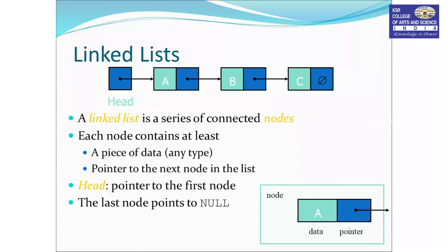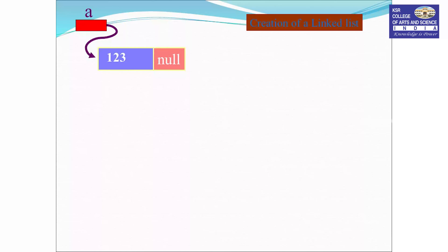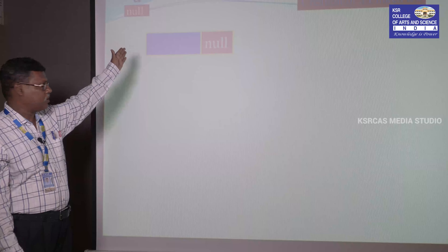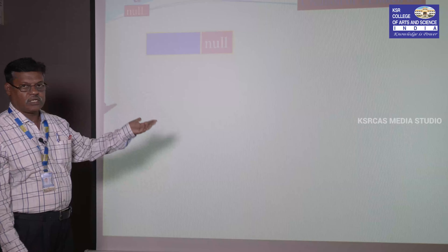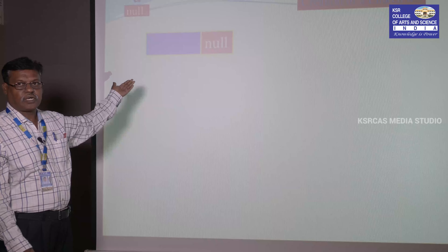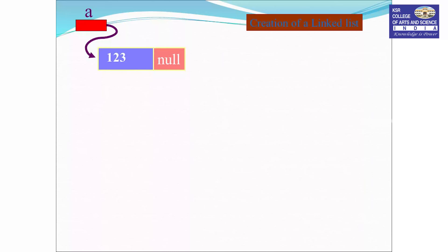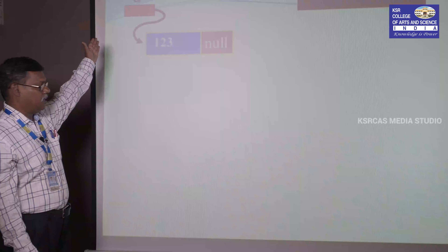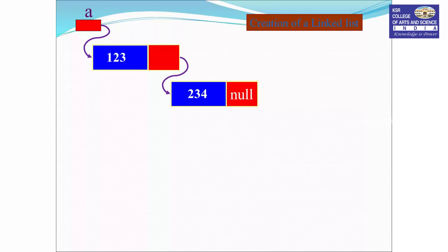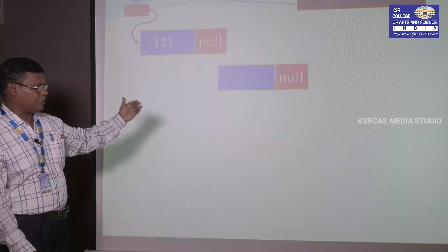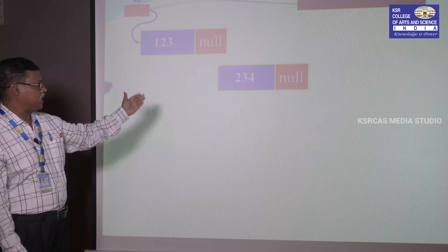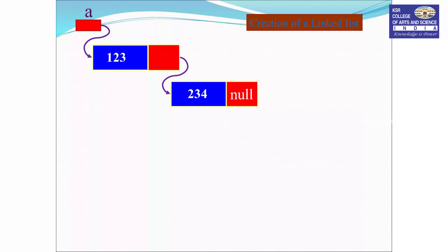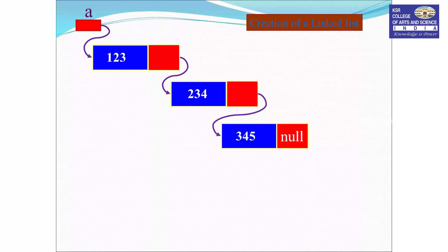In this slide, we discuss how to create a linked list dynamically. A is the header node containing null. We get a new node with data part and link part — the link part contains null. We store data item 123 in the first node, and the head node points to this node. Next, we get a second new node with data 234. The first node then points to the second node.